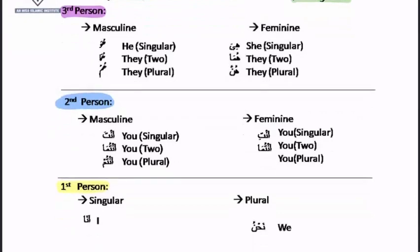When it is the second person — the person who is standing directly in front of us, who is close and actually present — for the second person masculine detached pronouns, we use 'anta' meaning 'you' singular, 'antuma' meaning 'you two,' and 'antum' meaning 'you' plural. For example, when my brother is standing in front of me, I say 'anta.' When two brothers, I say 'antuma.' When more than two brothers, I say 'antum.'